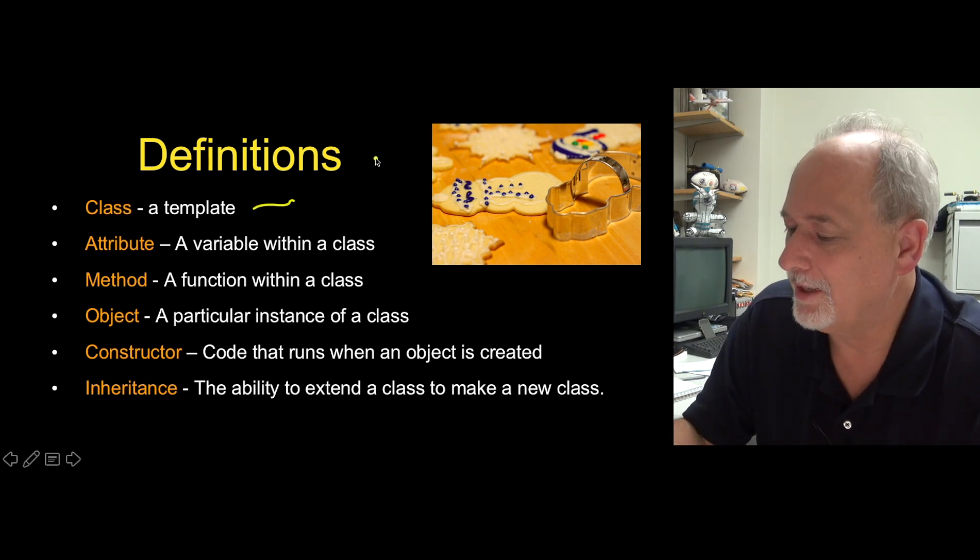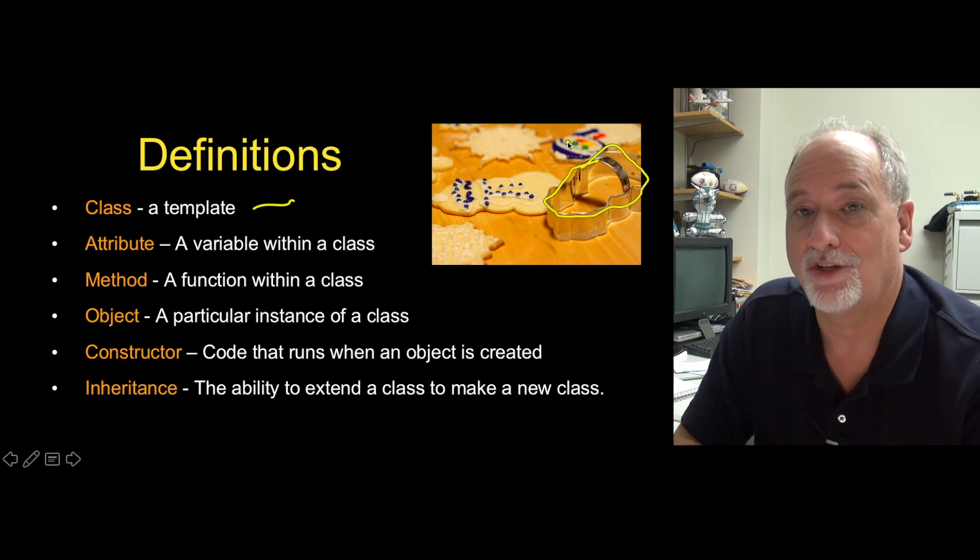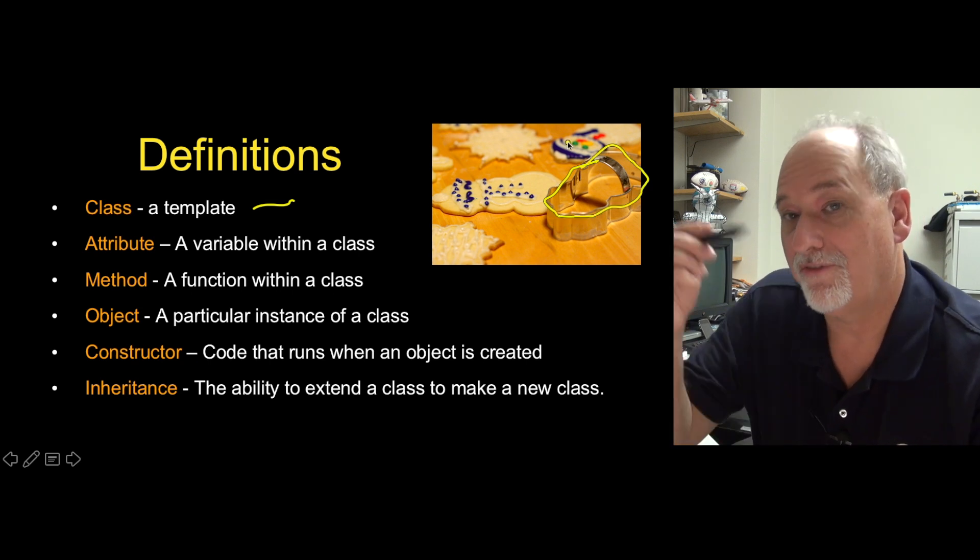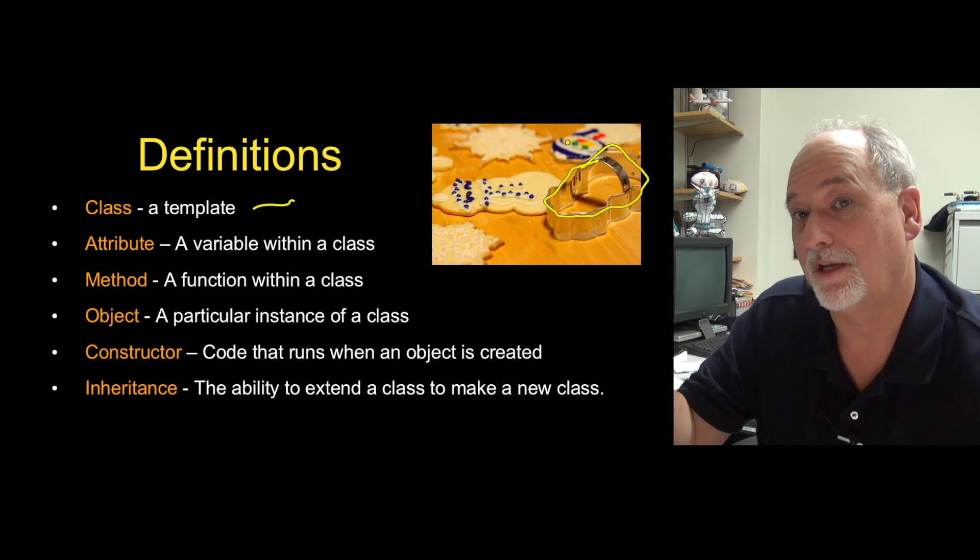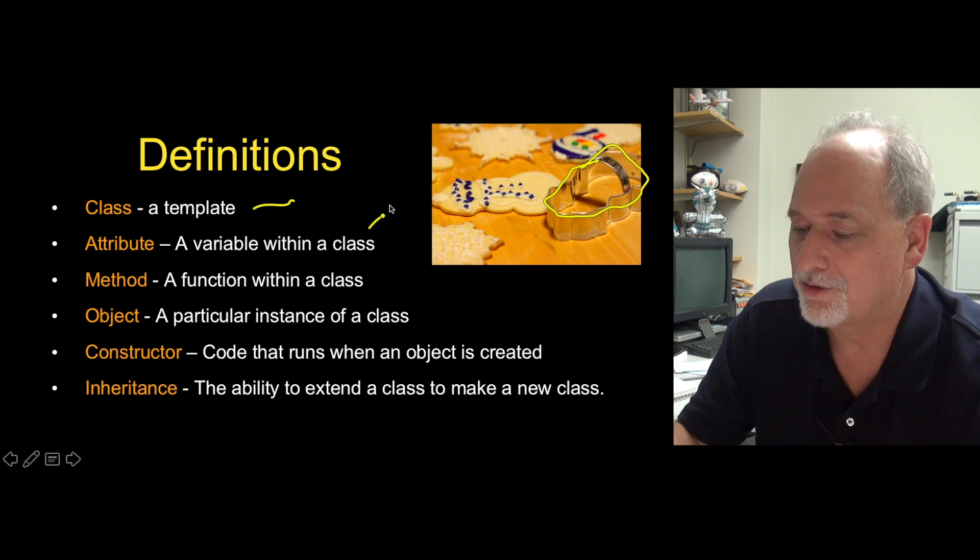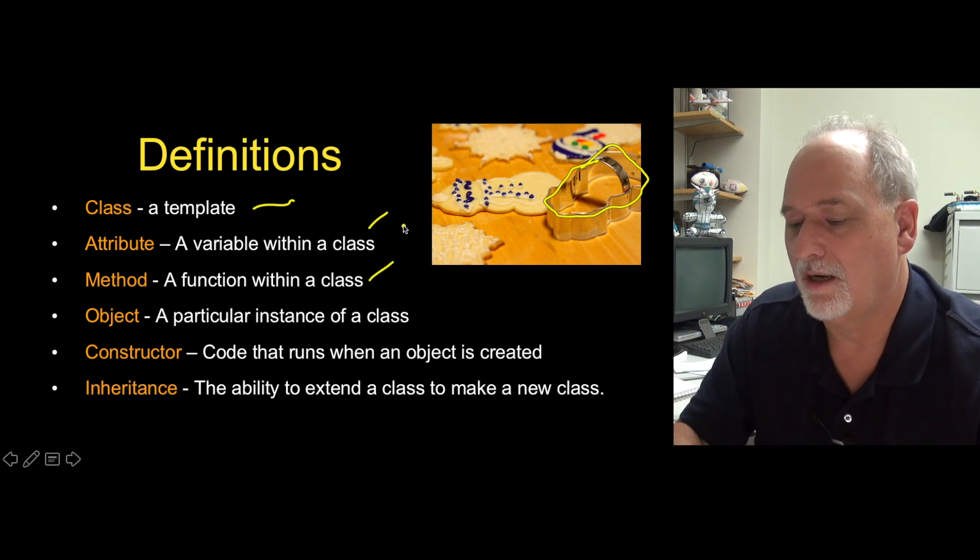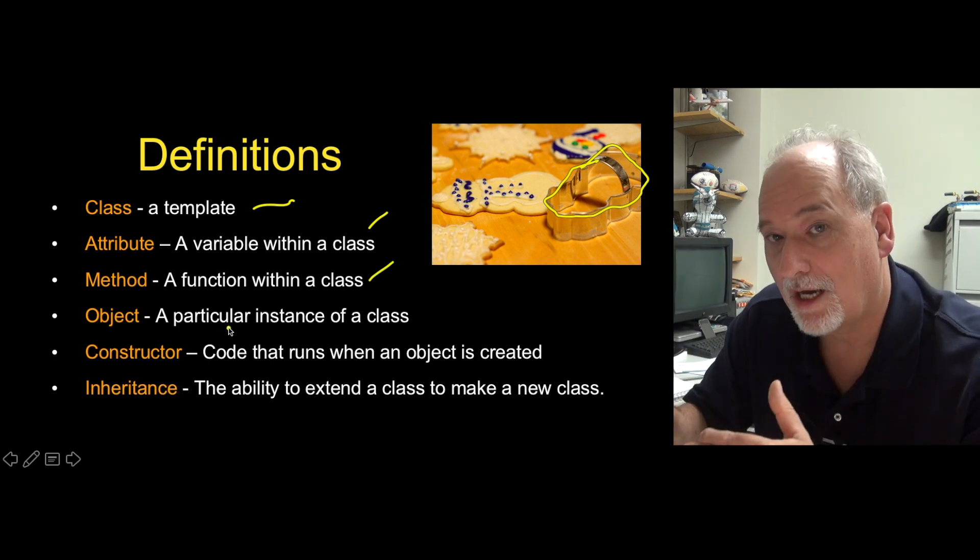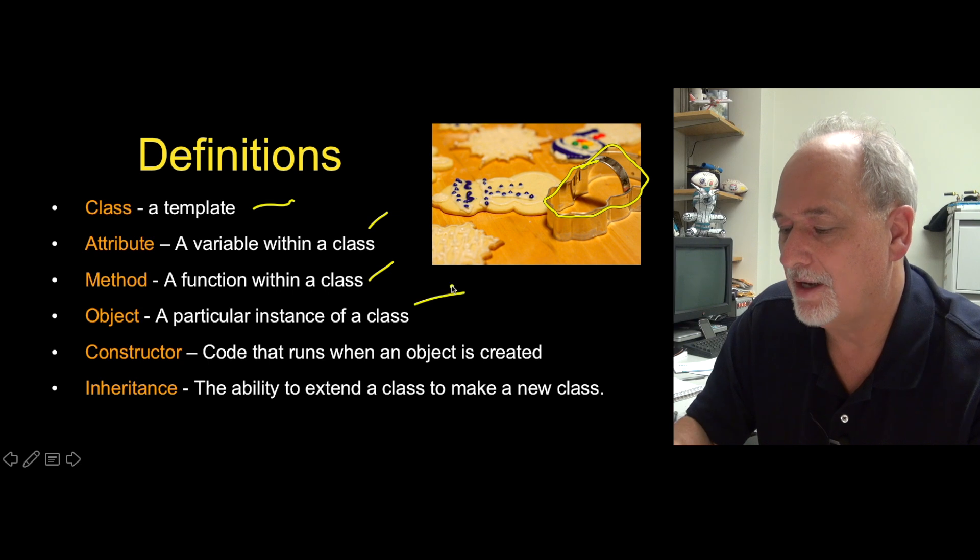Class is a template. It is not actually a thing. It is a shape of a thing. And we define it and say when we make one of these things, it's going to have these variables in it. It's going to have these methods in it. Attributes, variables within a class. Method is a function that's inside of a class.